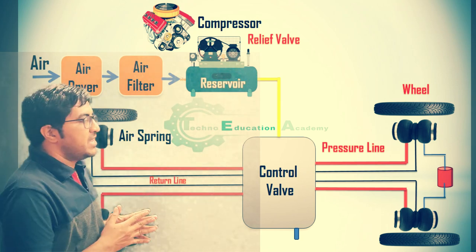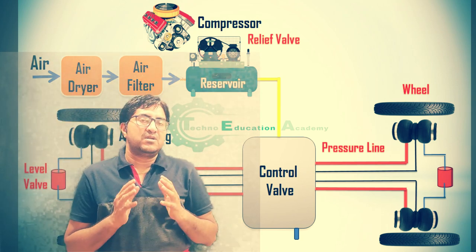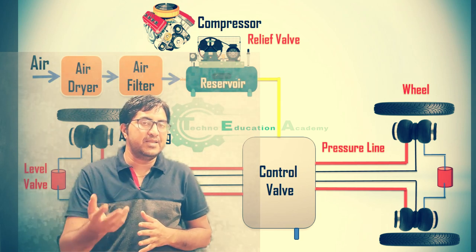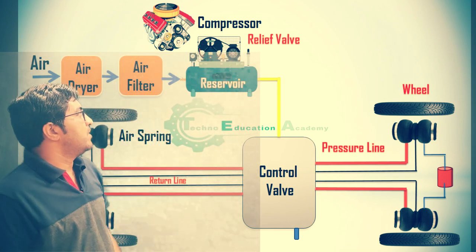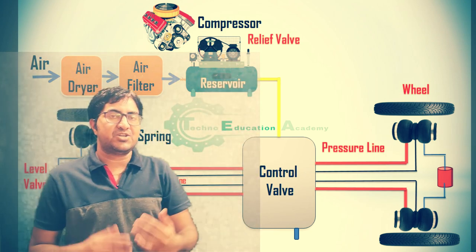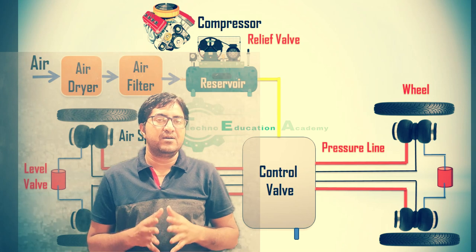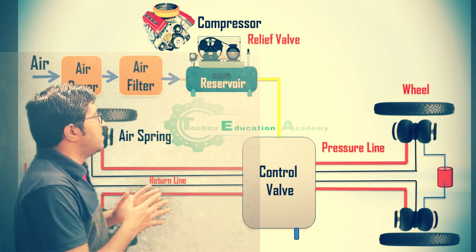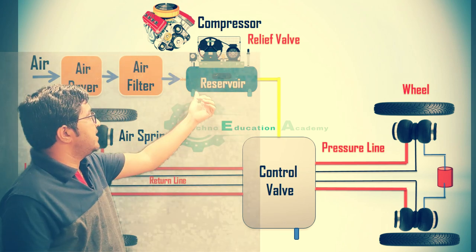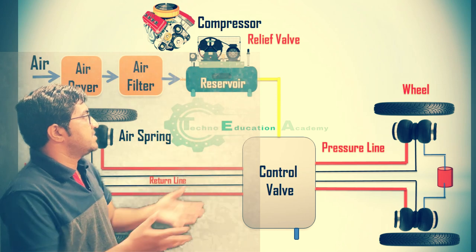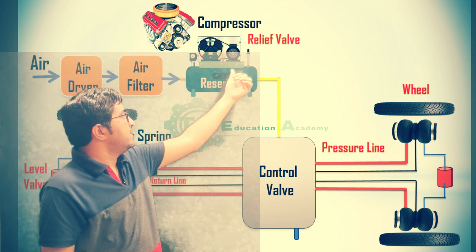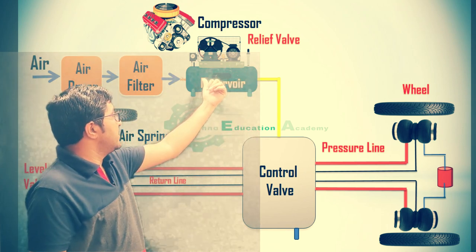The compressor compresses the air. Sometimes the pressure increases inside the air tank or reservoir. At that time, through the relief valve, it will release the extra air. The function of the relief valve is: whenever the compressed air is stored in the air tank and the pressure inside the reservoir increases, this air is released through the relief valve. Here you can see that this reservoir or air tank is connected with the control valve.